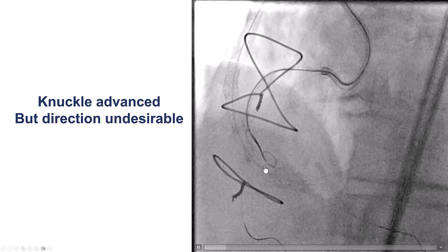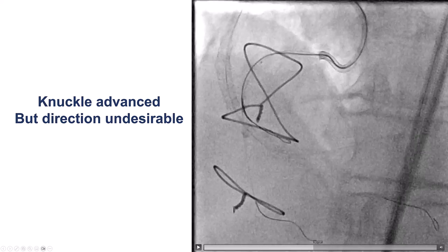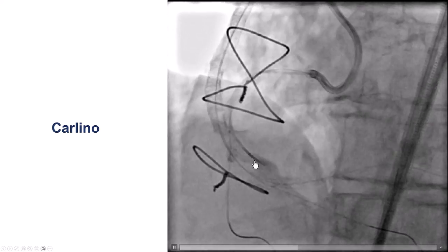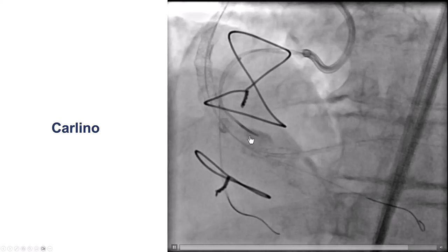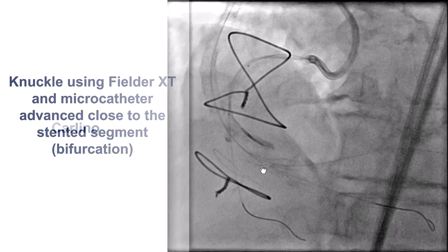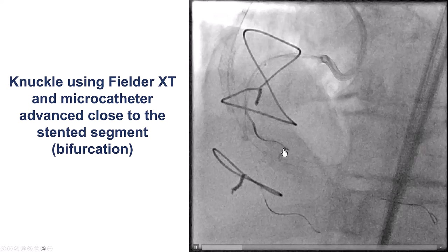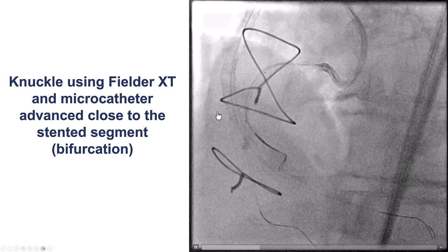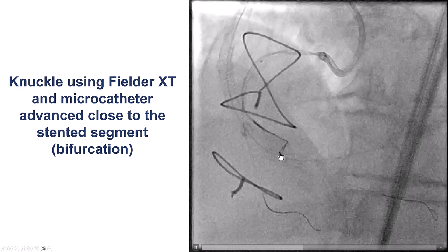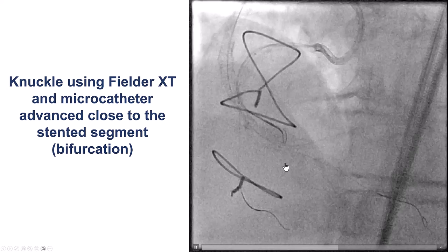We advanced the knuckle, but it became fairly large, and the direction was not exactly what we wanted, despite multiple attempts. So we decided to use the Carlino technique to clarify where we were, and there was a fairly large sub-intimal space there, which did not help us very much. We then tried different wires — a FilterXT that forms tight knuckles — and now we were actually able to reach the native RCA just proximal to the distal bifurcation.